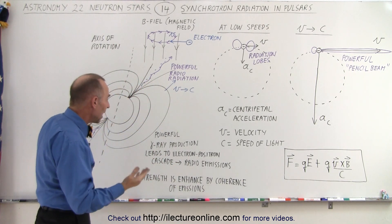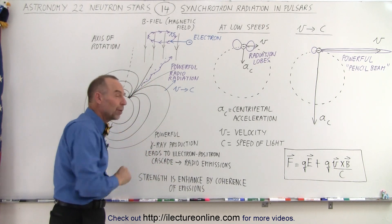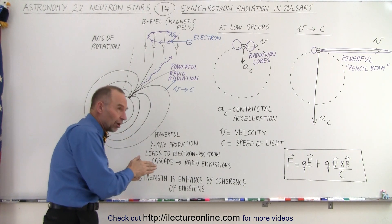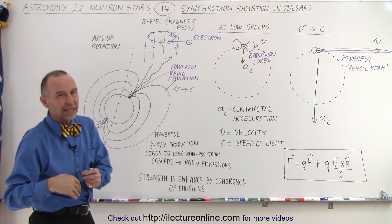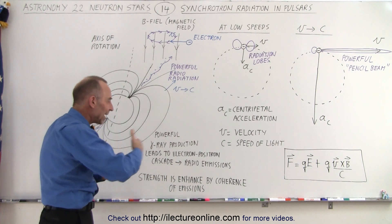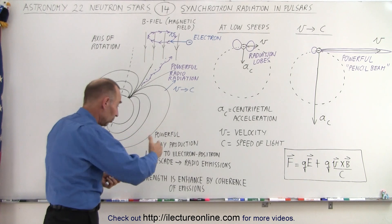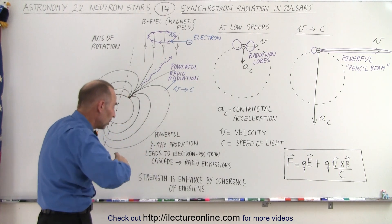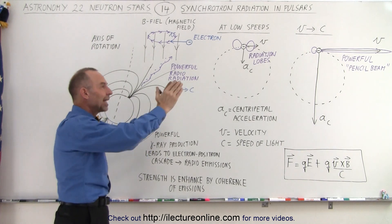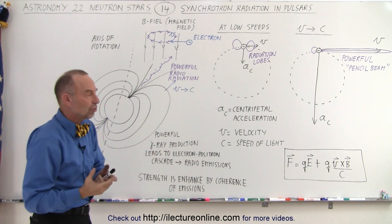In addition to that, we have the production of gamma rays. Very powerful gamma rays can be used to produce electrons and positrons. Positrons are the antiparticle of the electron, and so we produce electron-positron pairs in a cascade format. There are so many gamma rays produced that we produce an enormous amount of electrons and positrons, and they go cascading out, causing the radio emissions.